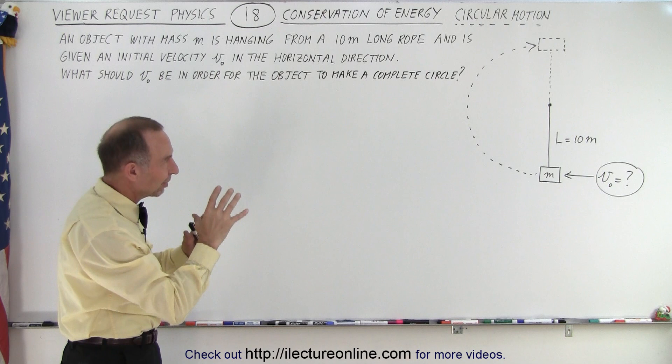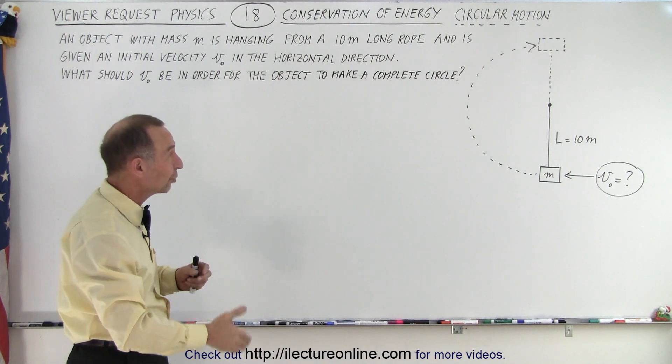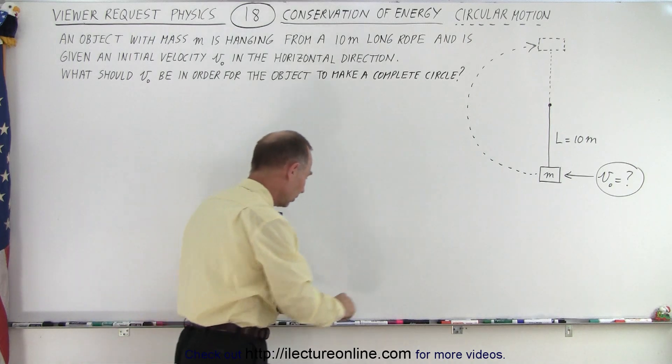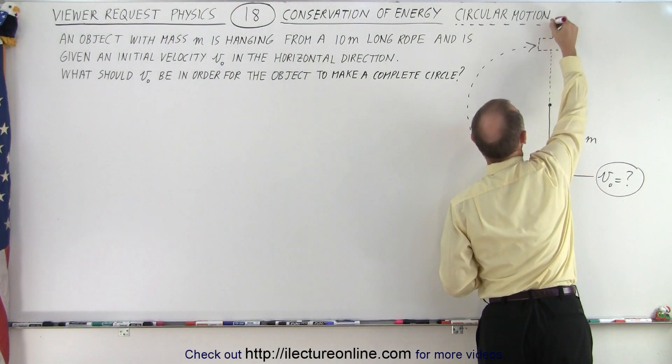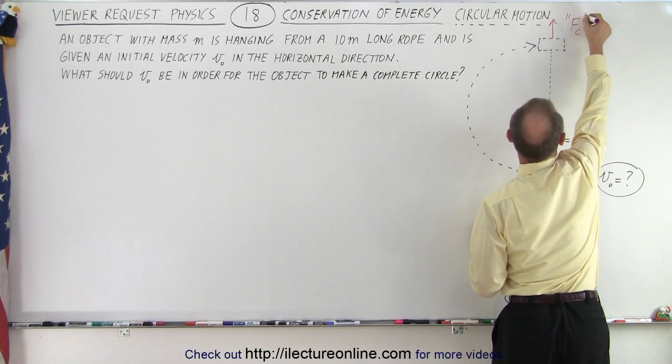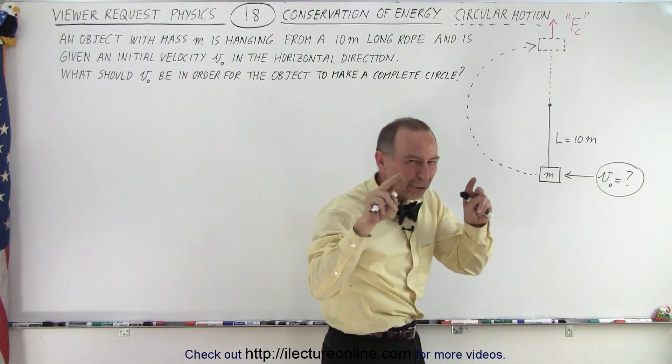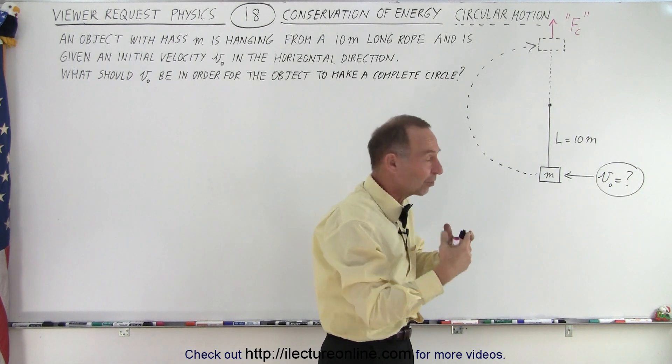What we need to think about is what happens at the very top. At the very top it must have enough speed so the rope stays straight which means that the force in the vertical direction of the centrifugal force. And of course the centrifugal force I put that within quotation marks because it's a fictitious force but it is easier to see.